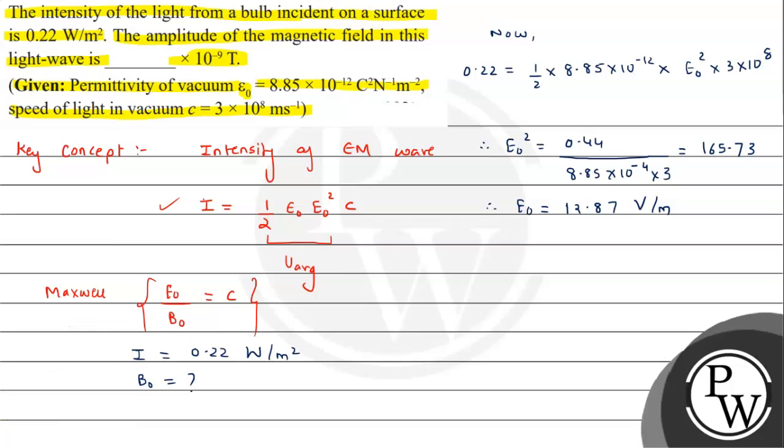This gives E₀ = 12.87 volts per meter. Now we can calculate B₀. We have B₀ = E₀/c, so B₀ = 12.87 divided by 3 × 10⁸. Therefore B₀ comes out to be 4.29 × 10⁻⁸ tesla.